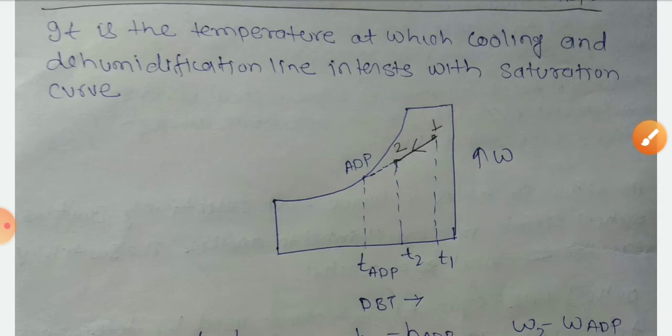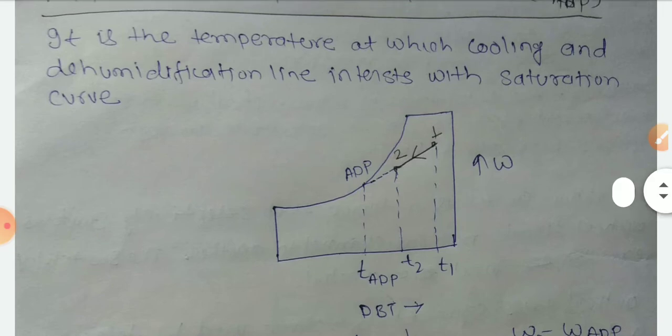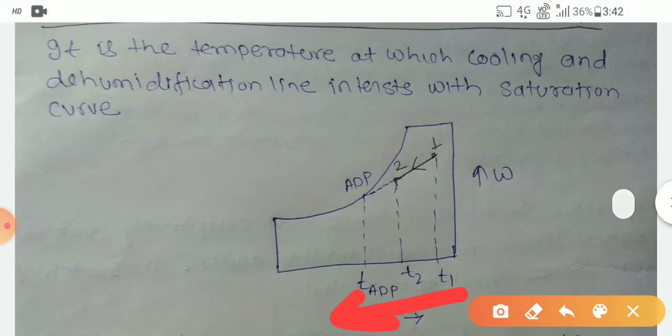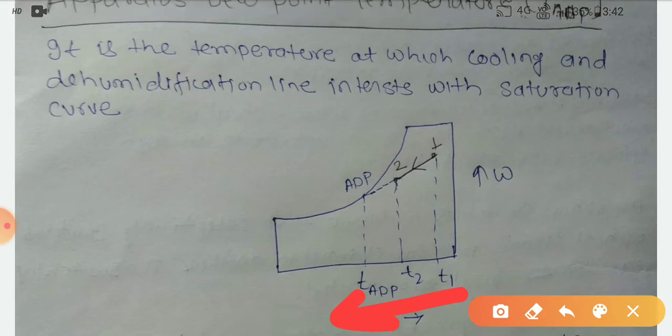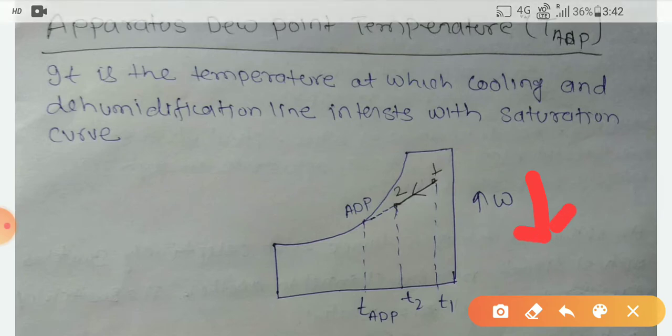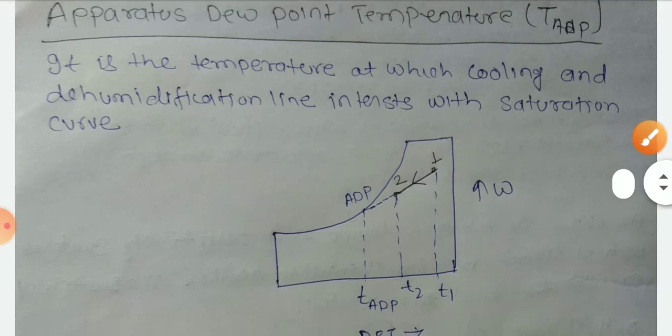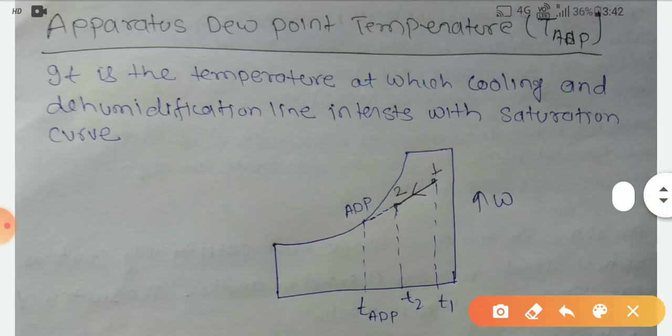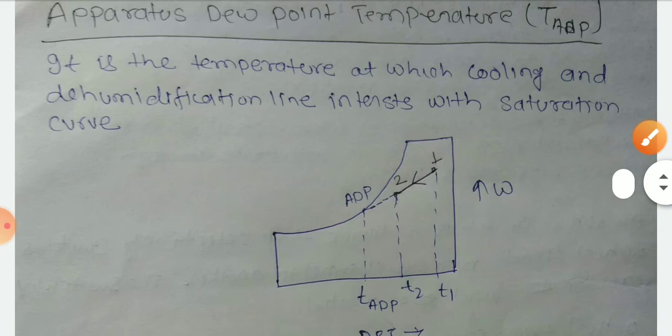So apparatus dew point is the temperature at which the cooling and dehumidification line intersects with the saturation curve. In this way, temperature is decreasing, so that means it's going to be cooled. And if you are going downward, then it's dehumidification. This line intersects with the saturation curve, and that one is called the apparatus dew point temperature.